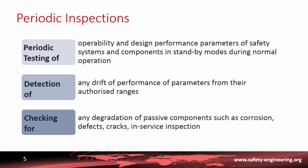The second element of the operating rules is periodic inspection and testing. These are used to test the operability and design performance parameters of safety systems and components which are in standby mode during normal operation. These tests are performed depending on the system every two weeks, every month, or at every outage each year.